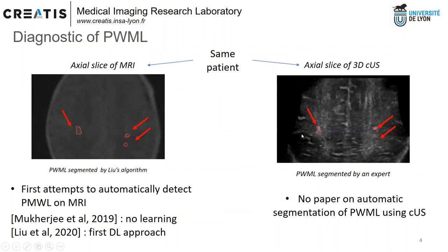Lesions are depicted in red here. Outlining these lesions is not an easy task. There has been recent work to automatically perform this task in MRI with a deep learning approach proposed by Liu et al. As far as we know, there is no reference on automatic segmentation in CUS.